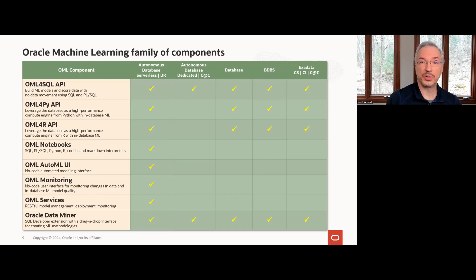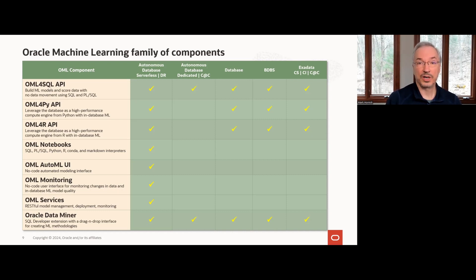This table provides a quick summary of the components available in OML and where they are available across Oracle Database and Autonomous Database. OML provides support for in-database machine learning from the top three data science languages: SQL, R, and Python. OML for R and OML for Python allow you to manipulate data directly in the database using DataFrame proxy objects. You can also invoke user-defined R and Python functions in database-spawned and managed engines, even from SQL and REST. On Autonomous Database Serverless, OML provides a built-in notebook environment as well as no-code user interfaces for AutoML and data and model monitoring in support of MLOps.